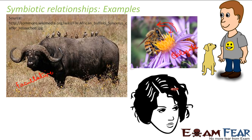Another example: lice present on our hair. The lice feed on the blood of our skin, receiving food and nutrients — that is how the lice gets benefited. But the person is not getting benefited. So in this case only one of them is getting benefited. This still falls under the category of symbiotic relationship because in symbiosis it is not necessary that both organisms get benefited — sometimes only one of them gets the benefit.